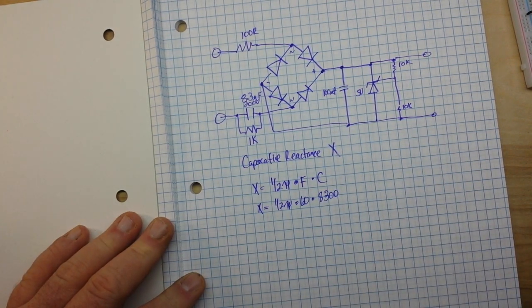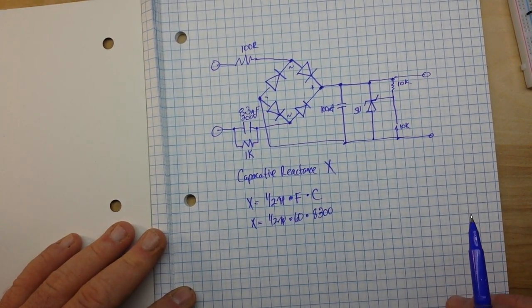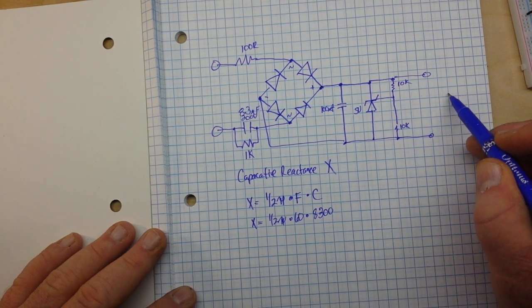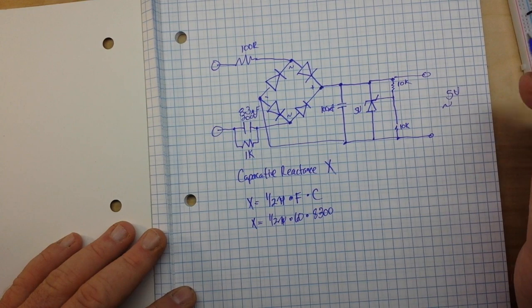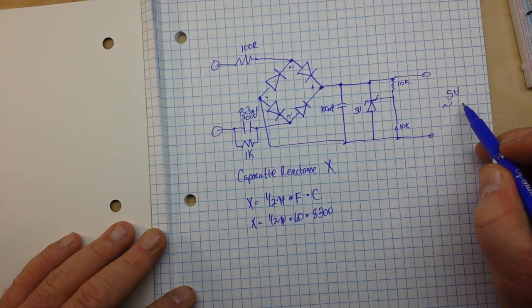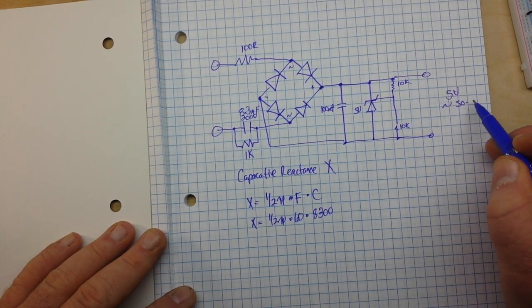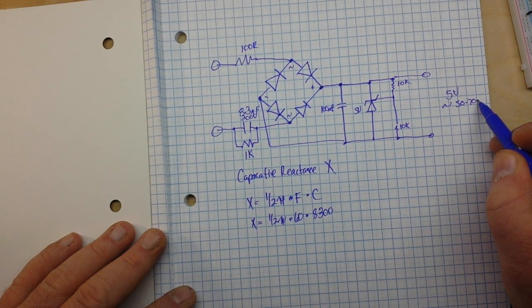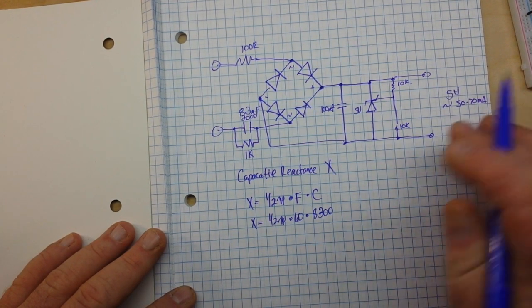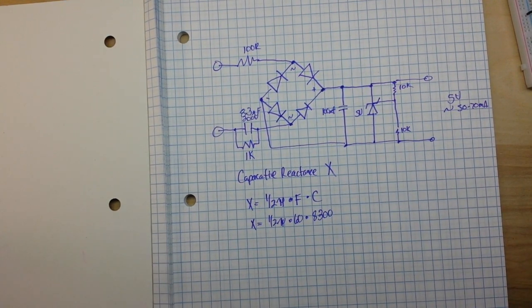There is your capacitive power supply, and this is going to output 5 volts at somewhere around 50 to 70 milliamps - somewhere in that general range, plus or minus say 10 milliamps on that.